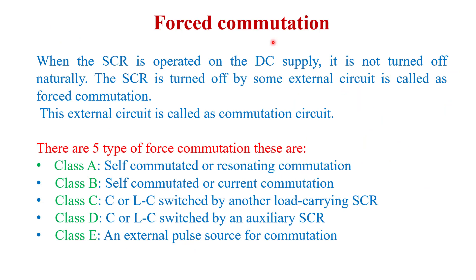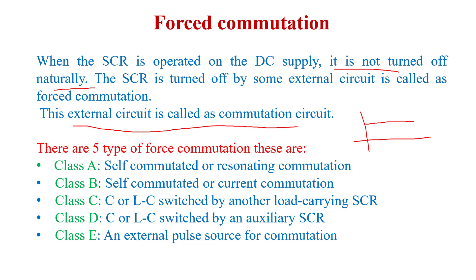In forced commutation, external force is applied to turn off the device using external circuitry. Forced commutation is used when DC power supply is given at the input side. A DC supply is constant and cannot change with respect to time, so it cannot naturally turn off any device. That is why an external forced commutation circuit is used. In SCR, this external circuitry used to force turn-off is called the commutation circuit.